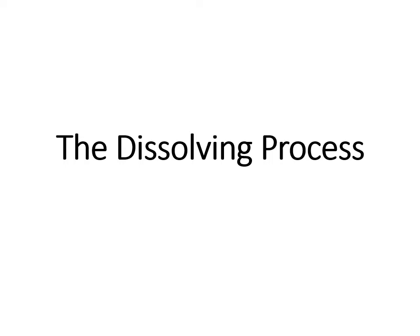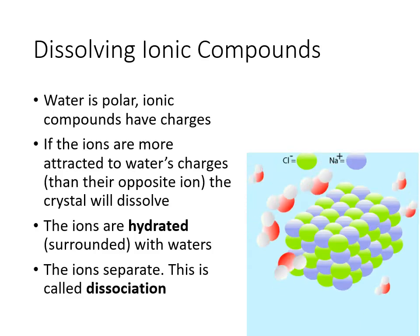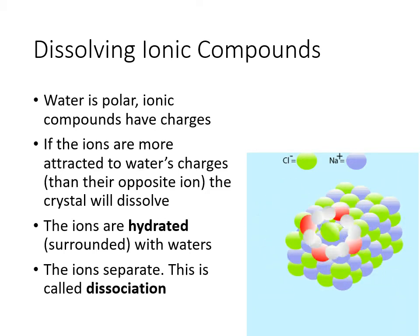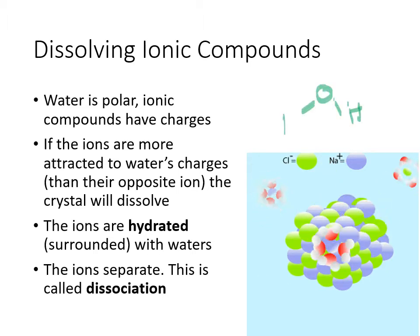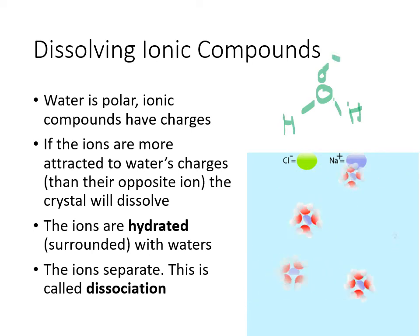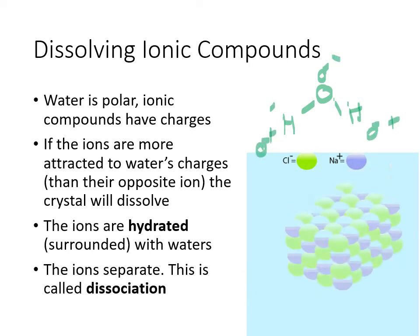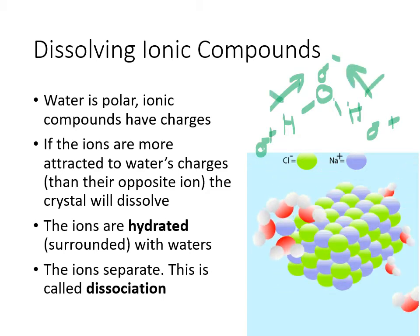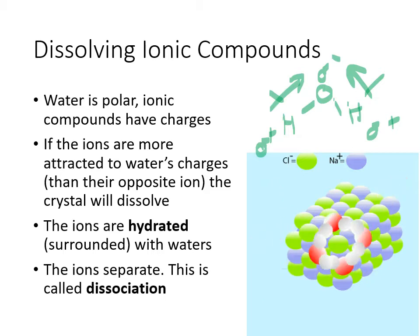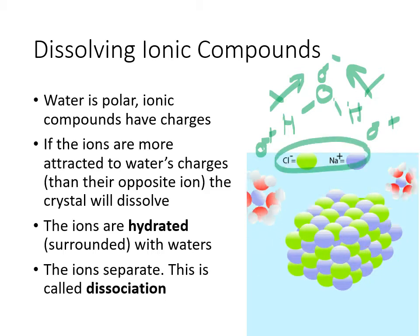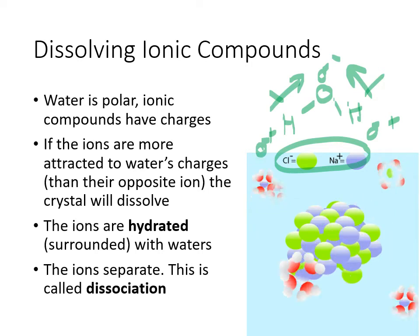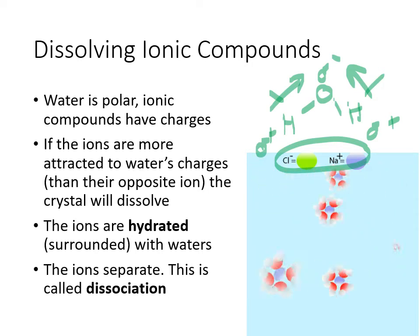The dissolving process for ionic compounds involves the polar water molecule, which has oxygen and hydrogens with partial negative and partial positive charges on the hydrogens. Water is polar, and ionic compounds also have charges, so they are attracted to each other. If the ions are more attracted to the water molecules, the crystal that makes up the ionic compound will break apart and dissolve.